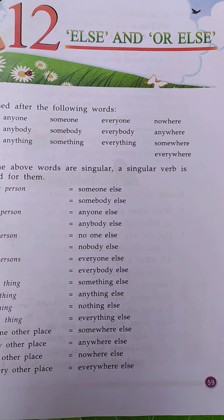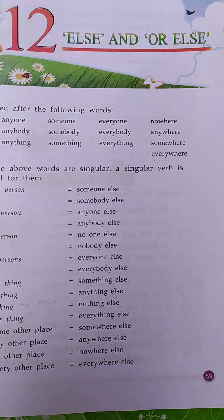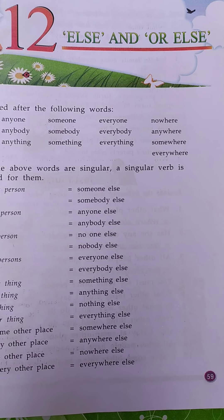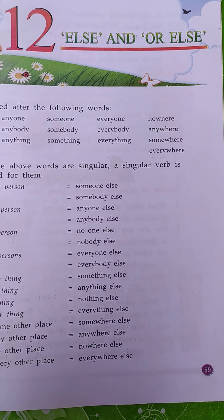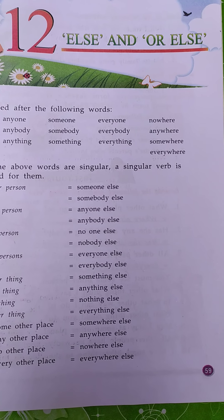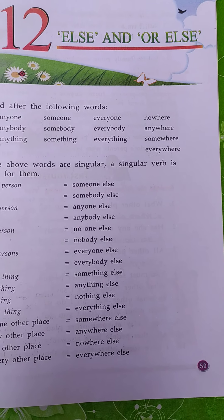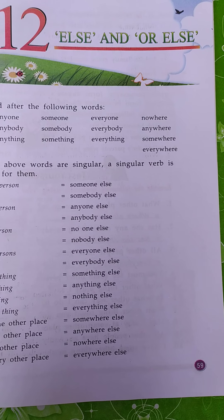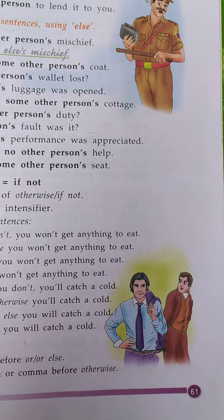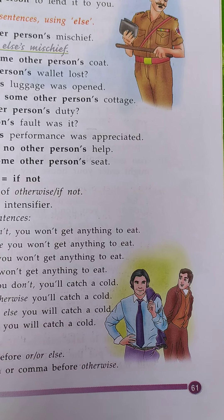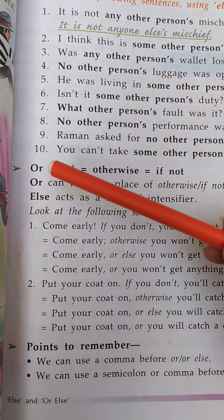Good morning students. This is your English class. Now we are studying chapter 12 in your English grammar book, which is about the topic 'else' and 'or else.' In the previous class we have already studied about the use of 'else' in detail. Today in this class we are going to study about the use of 'or else' in detail. Let's open page number 61 in your English grammar book and start reading from here.